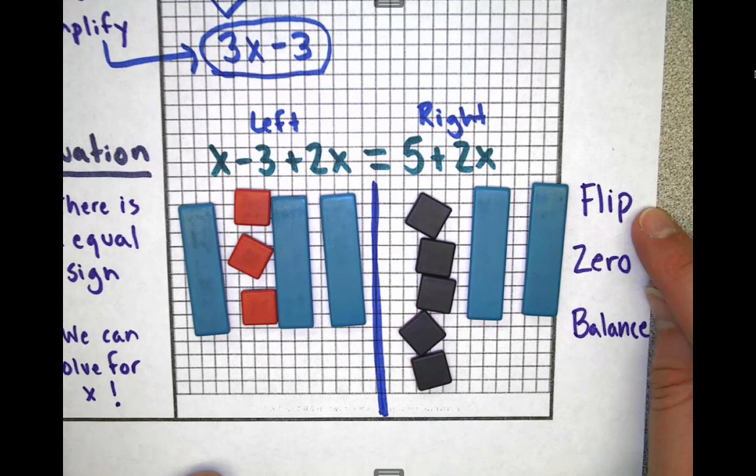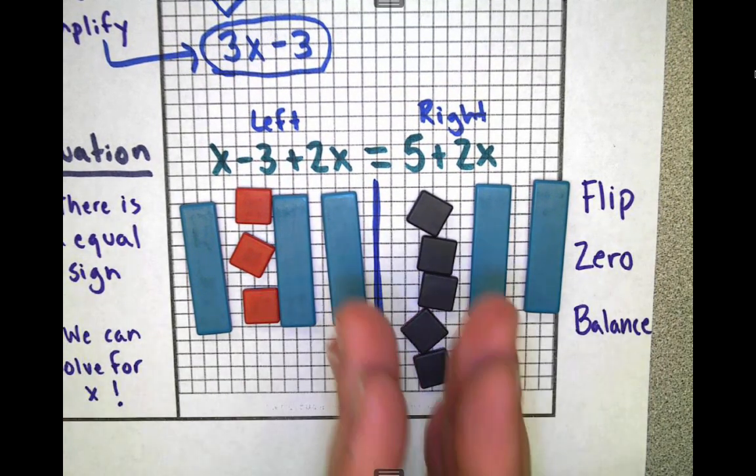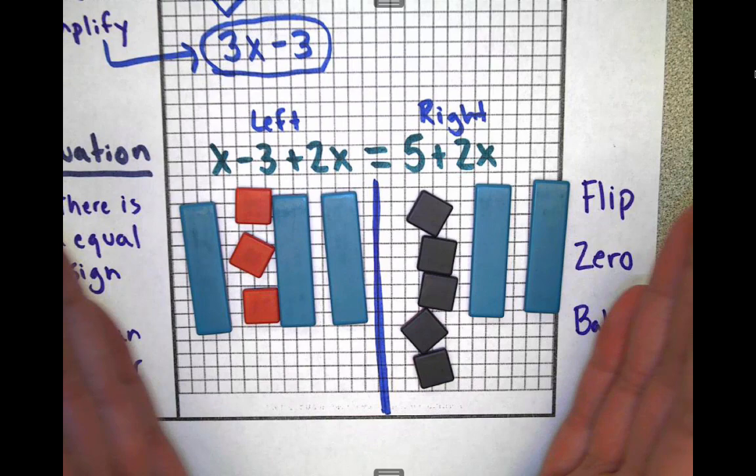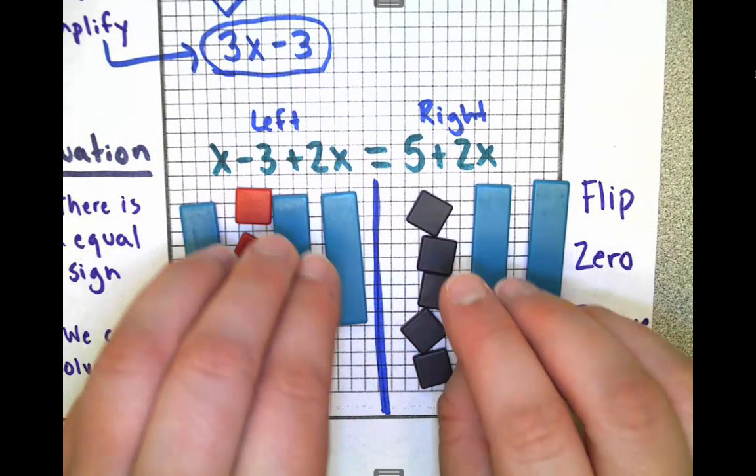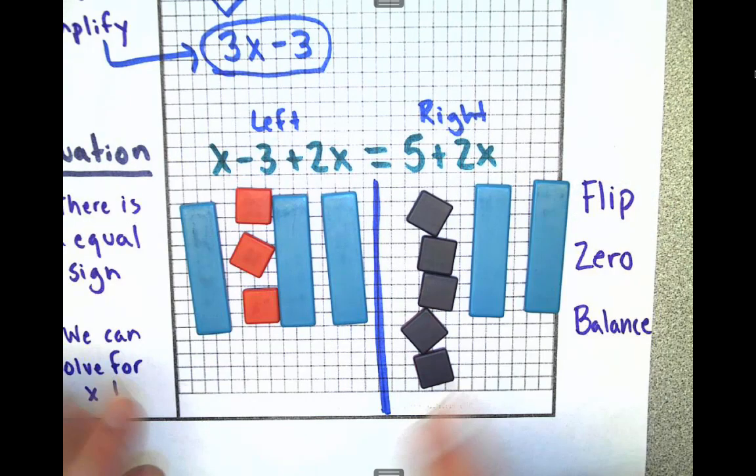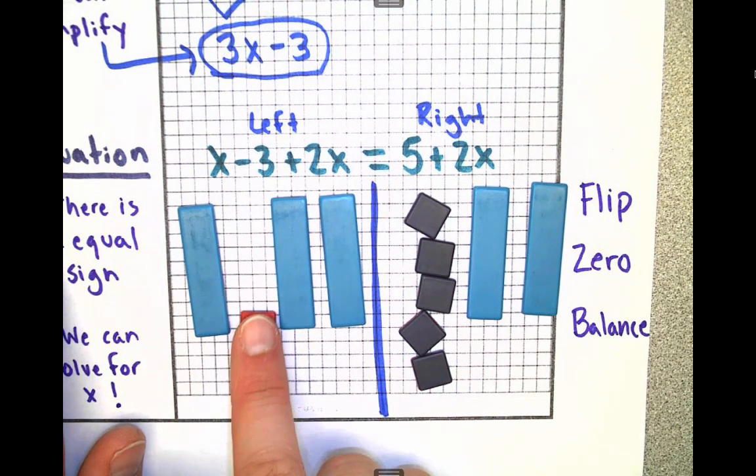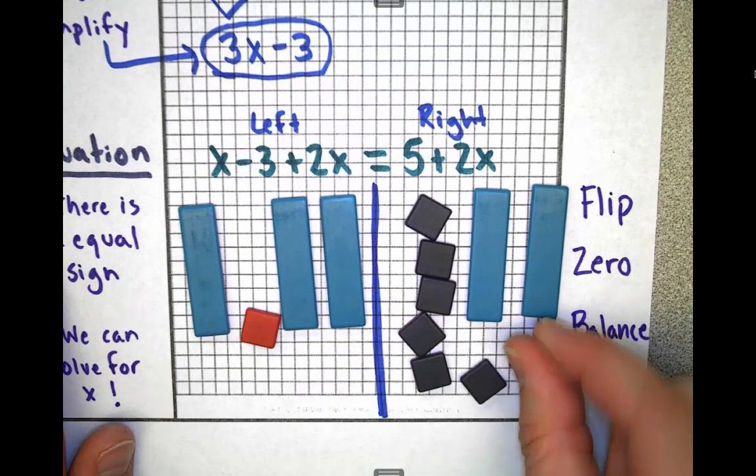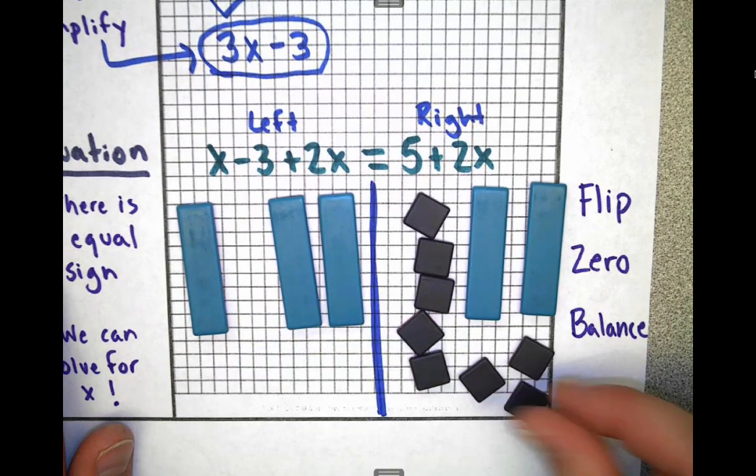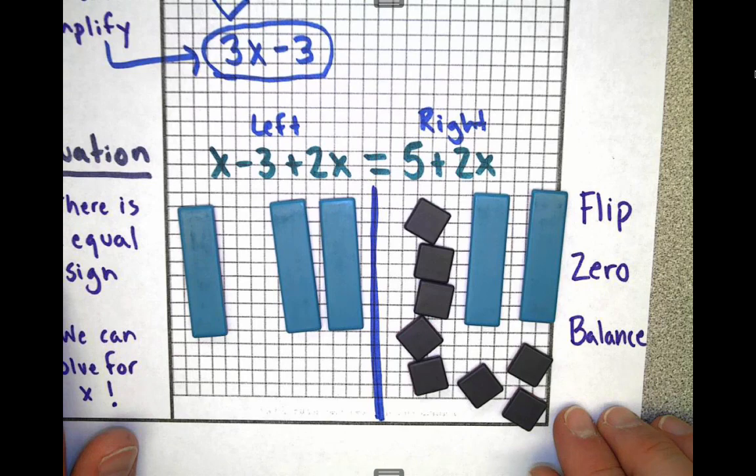Flip. What would I like to flip? I want to separate the numbers and the x's. I want all the little units on the right and all the x's on the left. These three red units on the left need to flip over to the right. There we go. Now we've got a bunch of units. That's flip.